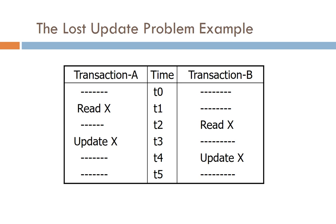Transaction A changed X from 5 to 6, but transaction B then changed X from 5 to 7. The last update — transaction B's update to 7 — is what gets stored in the database. The previous update of value 6 by transaction A is lost due to transaction B's update. This is the Lost Update Problem: the value 6 is lost, and X goes from 5 directly to 7.